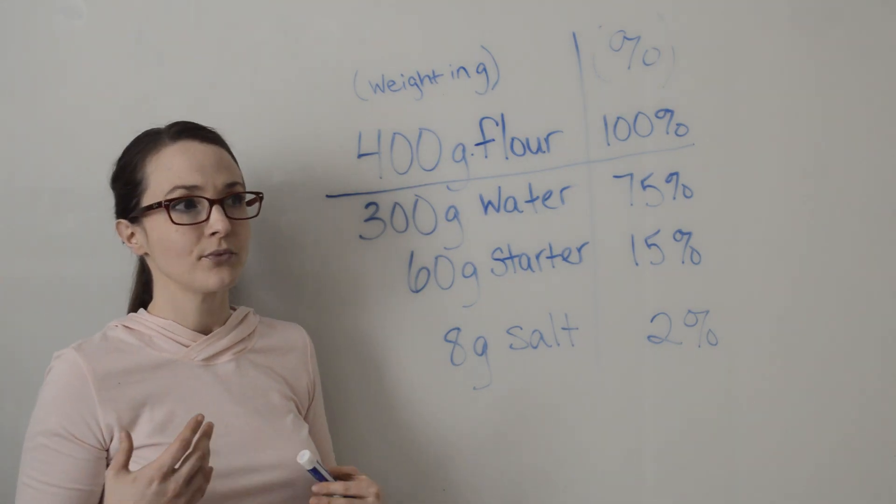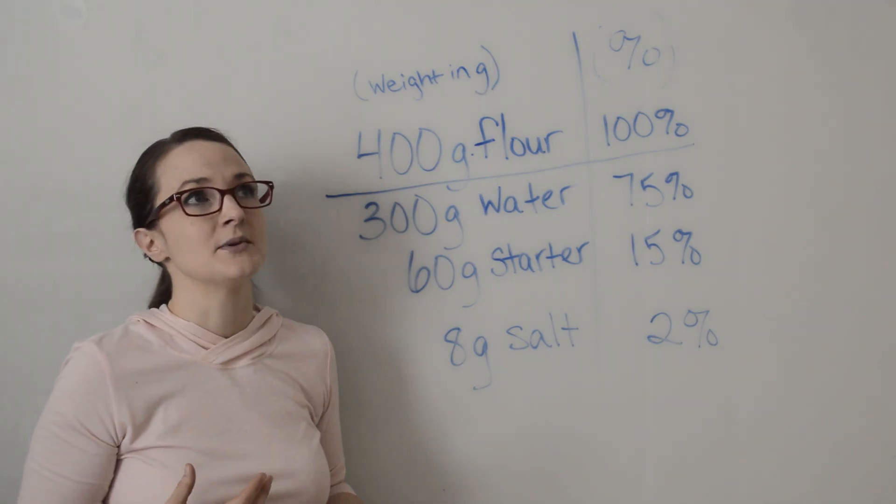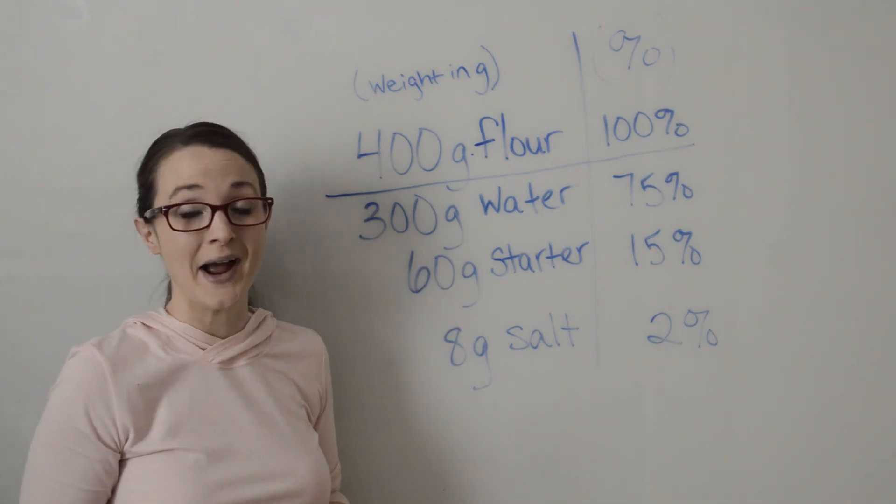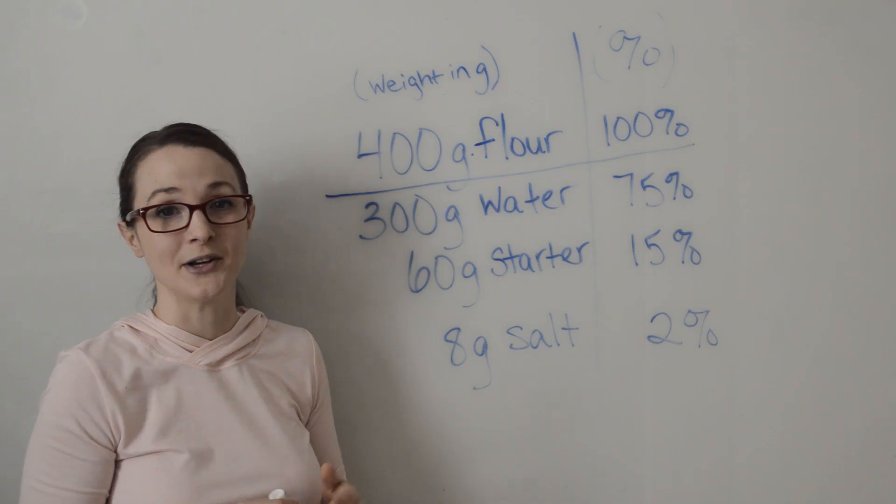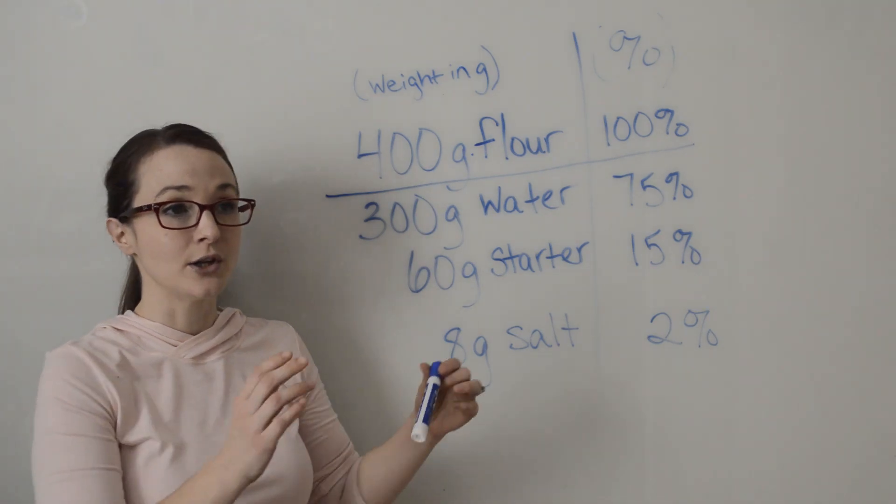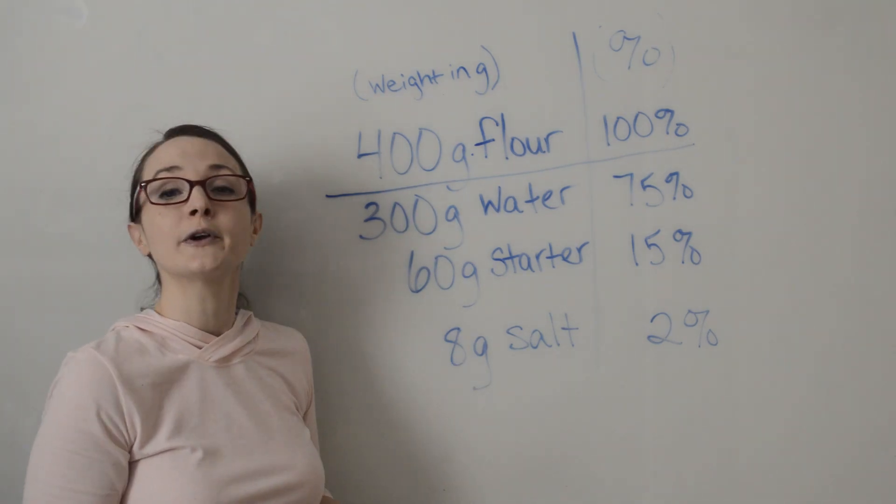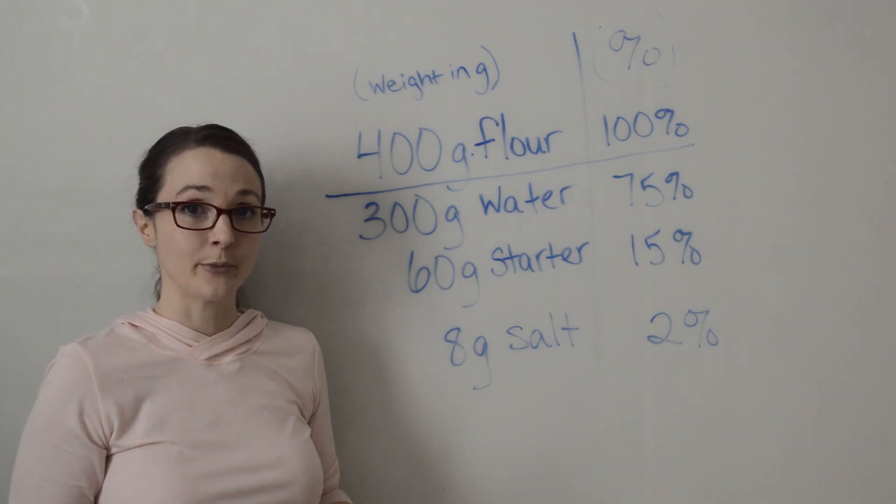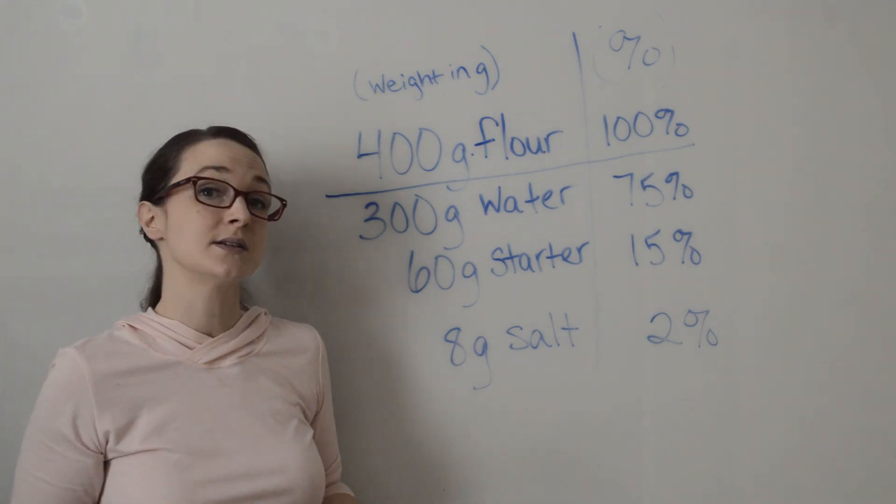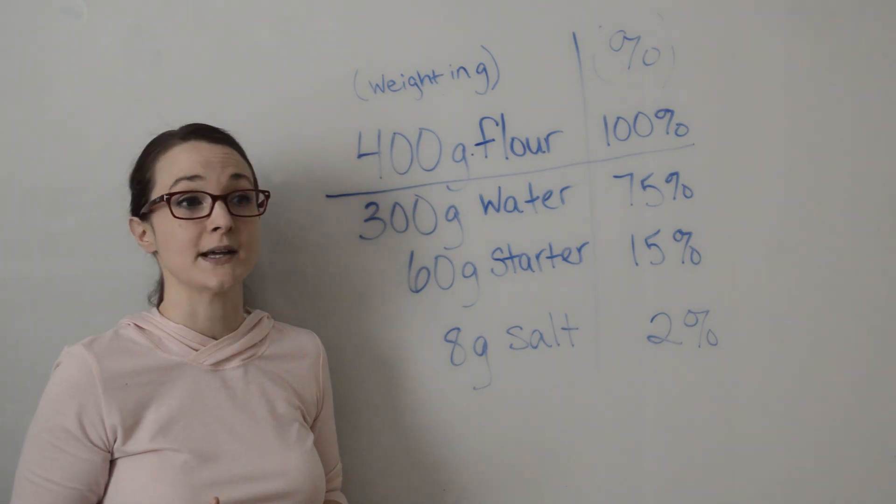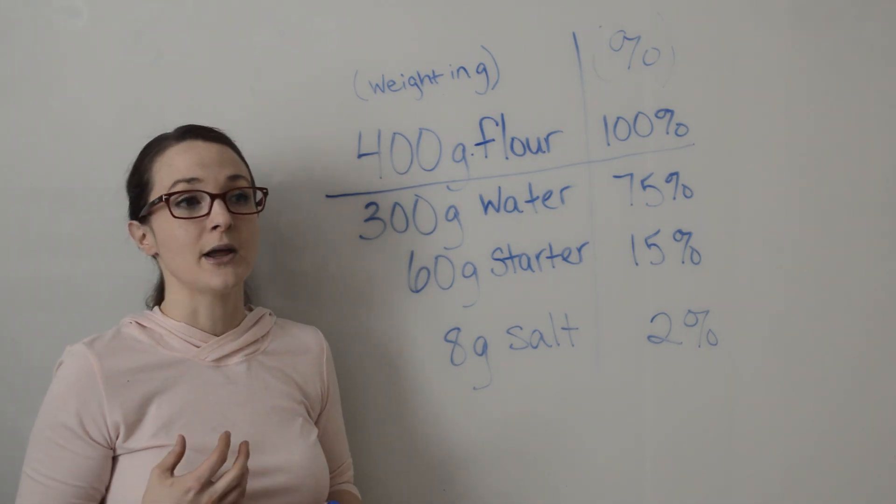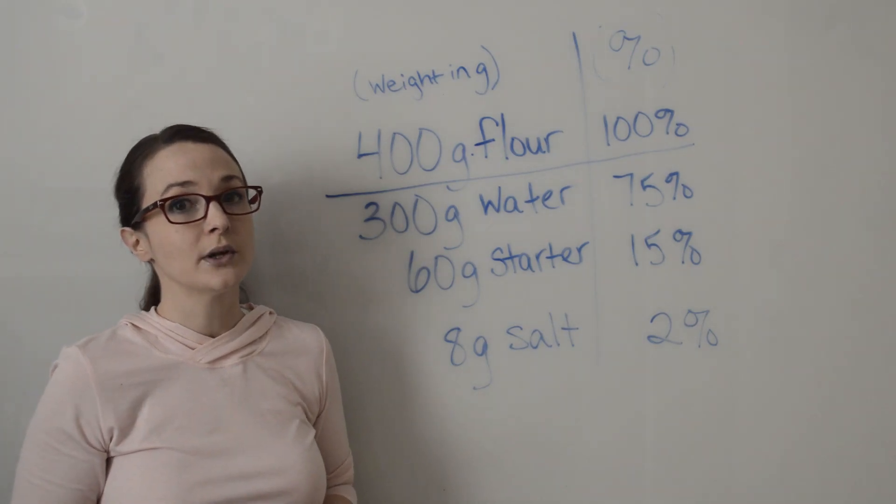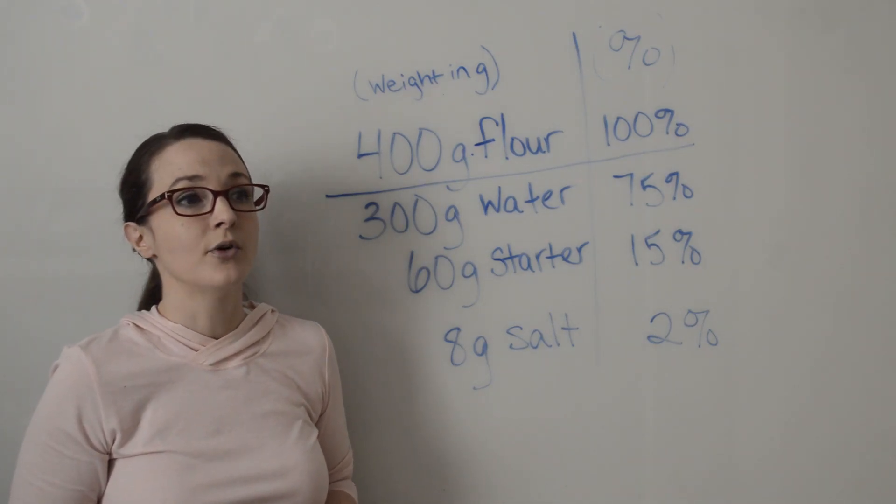When you start working with enriched doughs where you're adding milk and sugar and butter and different enrichments to your dough, you can look at the percentages and know, okay, this brioche is 30% butter and so that's going to be more of a lighter brioche, whereas this one over here is a 60% butter brioche and you know that that's going to be a much richer and a much softer dough to work with.